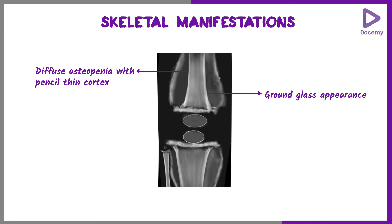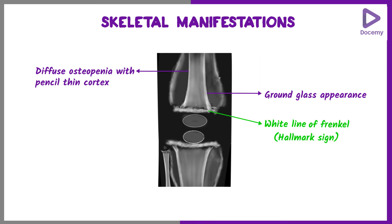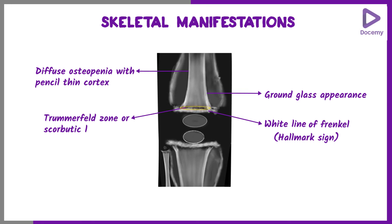At the metaphyses, there will be an irregular thick white line, which is a characteristic hallmark sign in scurvy known as the white line of Fränkel. Adjacent to the white line, there will be a hypodense radiolucent area known as the Trümmerfeld zone, or the scurvy line.